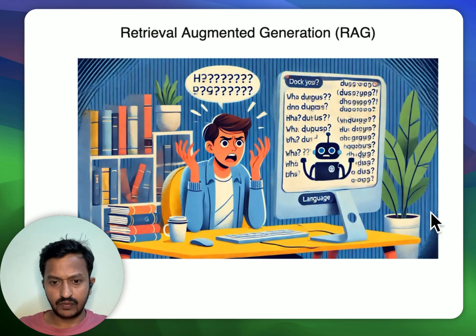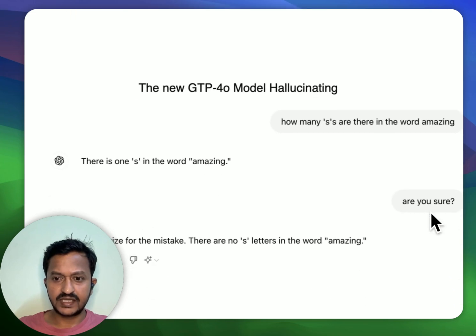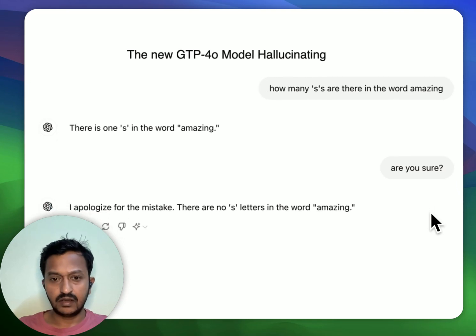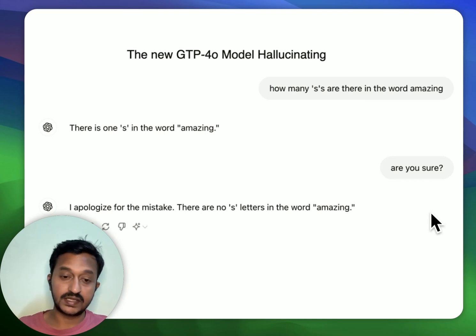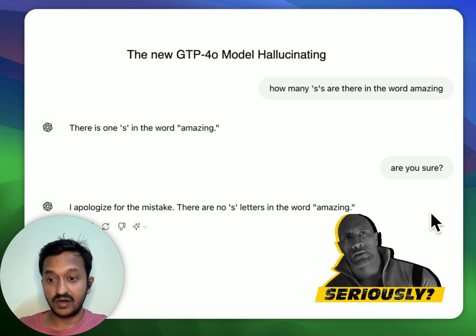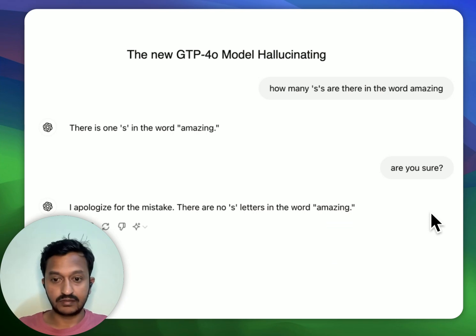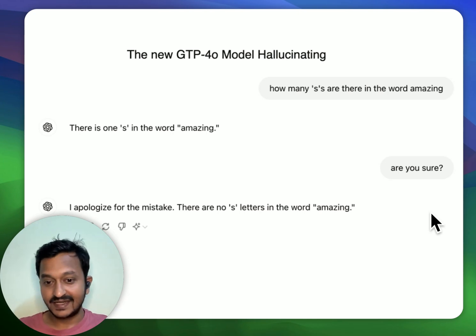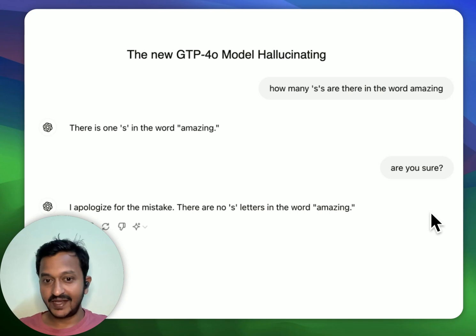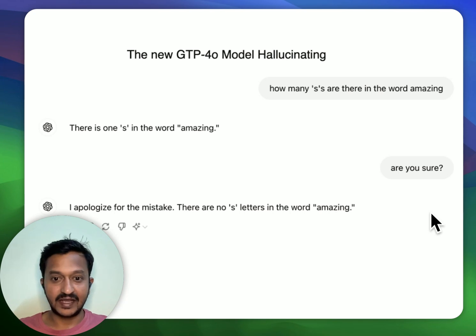As you can see, I was just chatting with the new GPT-4o model, and I asked it how many 'S' letters are there in the word 'amazing.' It said there is one 'S' in the word 'amazing.' I asked, 'Are you sure?' So it said, 'Hey, I apologize for the mistake. There is no S letter in the word amazing.' As you can see, this is one of the prominent new models from OpenAI, GPT-4o, that started hallucinating. This is one of the examples.